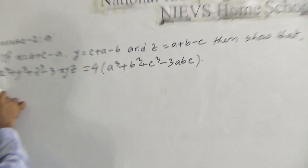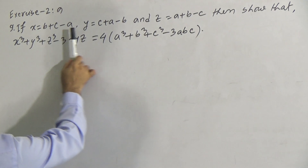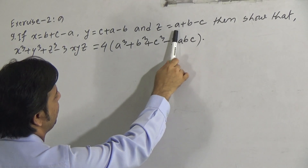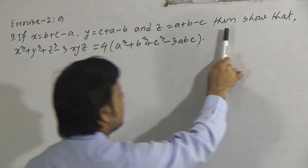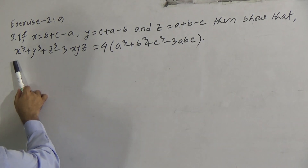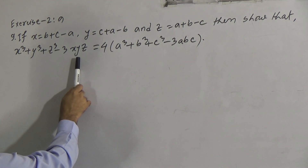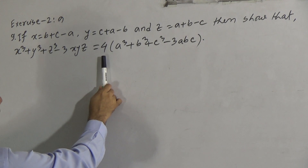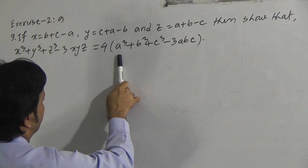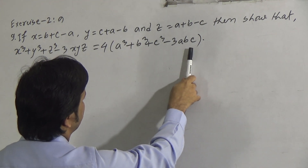Problem 9 is: if x equals b plus c minus a, y equals c plus a minus b, and z equals a plus b minus c, then show that x³ + y³ + z³ − 3xyz = 4(a³ + b³ + c³ − 3abc).